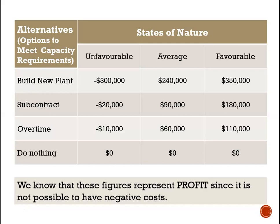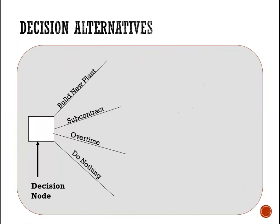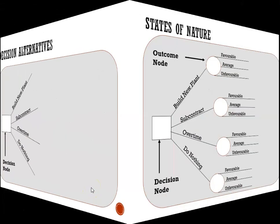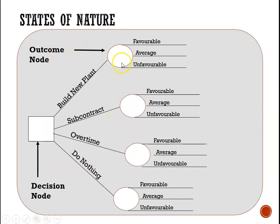Let's do this again, looking at this profit table. We are choosing alternative options to meet capacity requirements. The choices before us are: build a new plant, subcontract, do overtime, or do nothing. The figures in the table represent profit. We start out with our decision node and show our decision alternatives. With the square indicating a decision to be made, the choices are to build a new plant, subcontract, overtime, or do nothing. Next we add our states of nature through our outcome nodes. The circles represent our outcome nodes. I show an outcome node here, but I did not need to show one, and I will show you why — I am going to remove this outcome node.